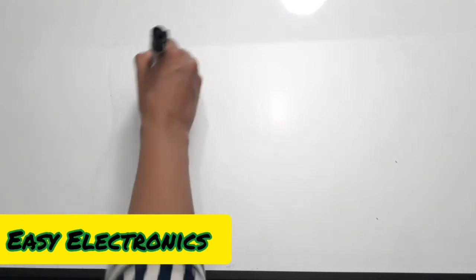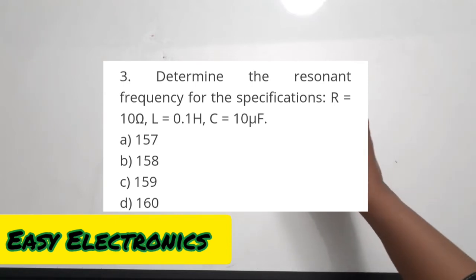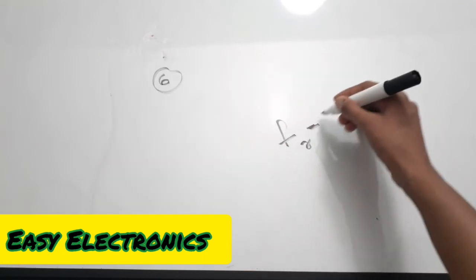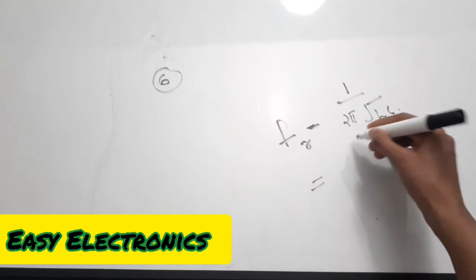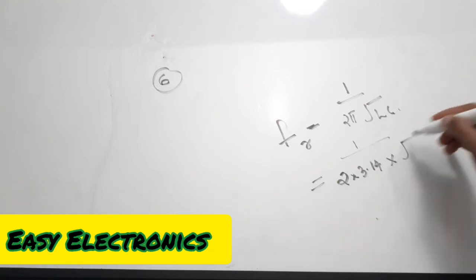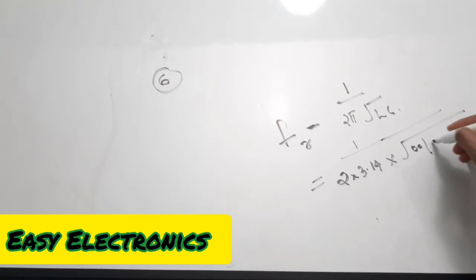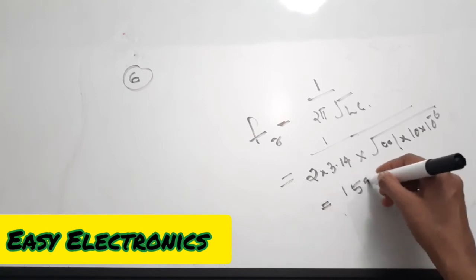The sixth question is from the series RLC circuit — determine the resonant frequency. Given: R equals 10 ohm, L equals 0.1 henry, and C equals 10 microfarad. The resonant frequency formula is f_r equals 1 divided by 2-pi times square root of LC. Substituting: 1 divided by 2 times 3.14 times square root of 0.1 times 10 times 10 to the power of minus 6. Solving this gives 159.2 hertz.